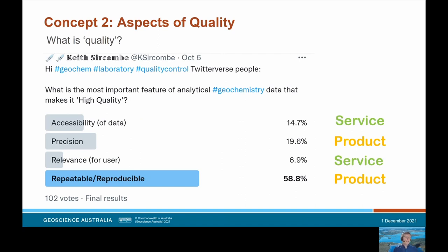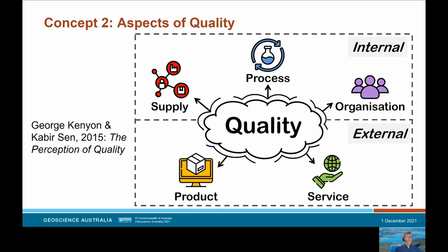I find that emphasis fascinating — no doubt a function of geochemists being rightly obsessed with getting the science right. But from a laboratory perspective, quality is more than the produced dataset. I really like the model of aspects of quality from Kenyon and Sen 2015. The two external-facing aspects a customer or data user sees are product — what the product is — and service — how it is delivered. Internal aspects include supply: how is the quality of supply chains or outsourcing managed? Process: how is the quality of the process creating the product managed and documented? And organisation: how is the organisation itself committed to quality management and how is this demonstrated?